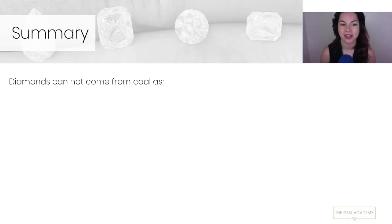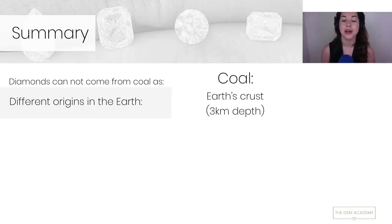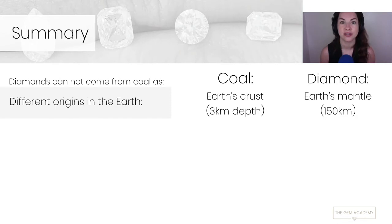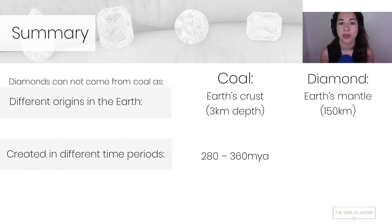So in summary diamonds cannot come from coal because they have very different origins in the earth. Coal being from relatively shallow depths of about three kilometers for the deepest coal seams and diamonds average around 150 kilometers down and some much much deeper as well. They're also created in different time periods, so coal being averagely about 300 million years ago and diamonds being a billion to 3.5 billion years old. The majority are thought to be over 3 billion. So in summary diamonds do not come from coal but we will revisit this idea as we look deeper into some origins of diamonds later.